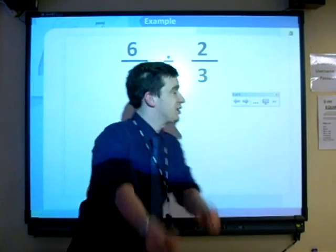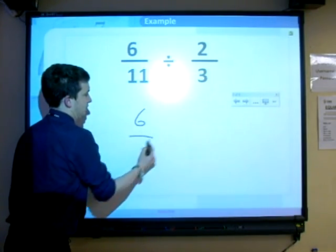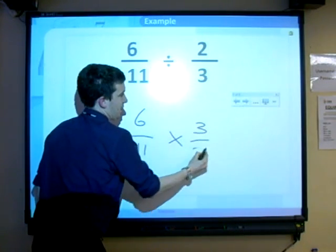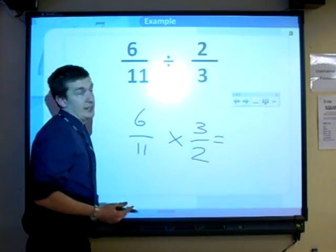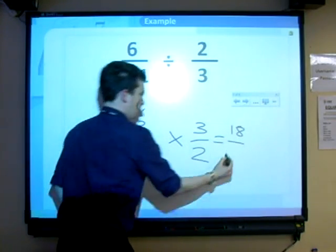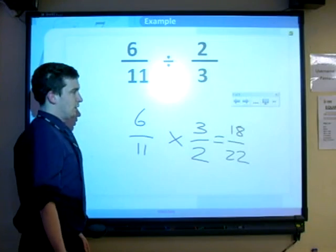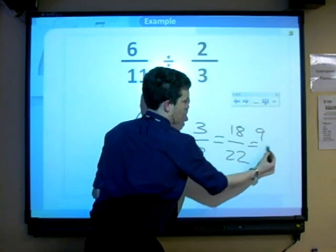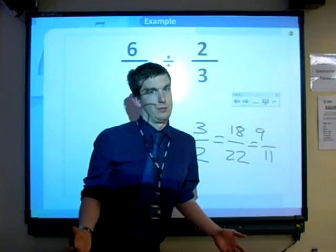Let's do another example. So remember, flip reverse it. So we've got 6 over 11, reverse, flip, and then times it. 6 times 3, 18. 11 times 2, 22. 2 goes into both, 9 over 11. We're done. Easy.